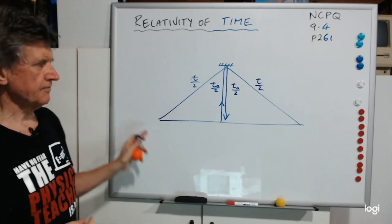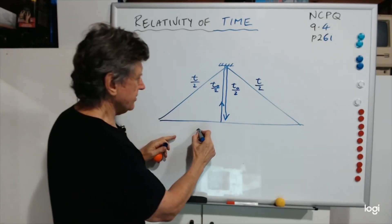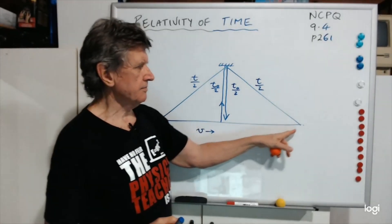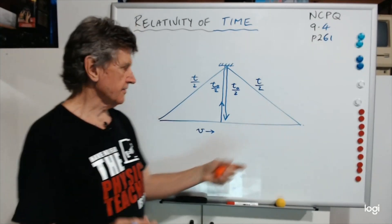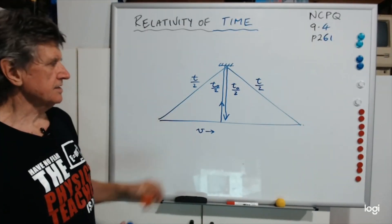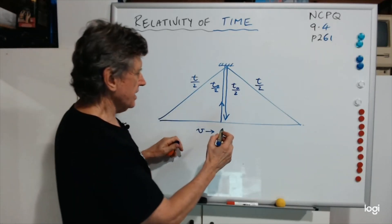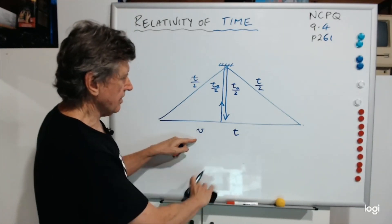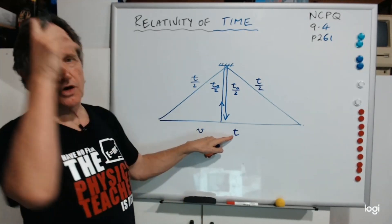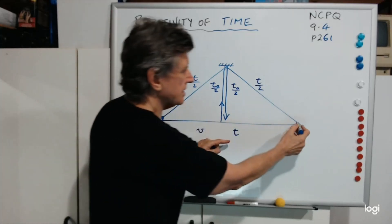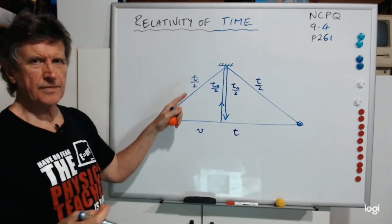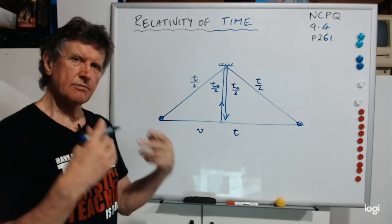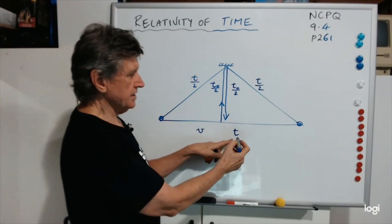Now let's also give a value to the bottom. Let's say the train is moving at a speed of V. The time taken to get from there to there in your frame of reference would be related to V, related to the time. Would it be T or T0? Well, it's moving relative to you — the event of the train being there and then there is moving relative to you. So it'll have to be T, not T0.